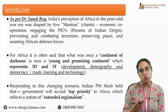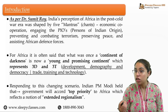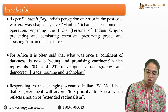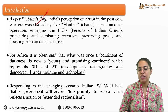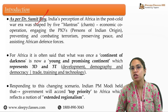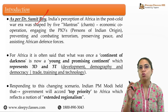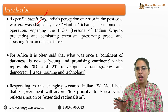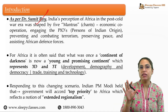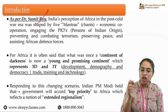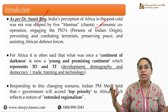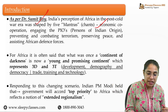Dr. Sumeet Roy talks about how India's perception in Africa in the post-Cold War era was framed by 5 main mantras. What were these 5 mantras? First, economic cooperation between these two developing zones. Then diaspora diplomacy — there are a number of persons of Indian origin in Africa, through whom diaspora diplomacy can be conducted. Then preventing and combating terrorism, which exists a lot in Central Africa, East Africa, and West Africa. Preserving peace — India has been contributing a lot to the peacekeeping forces there.